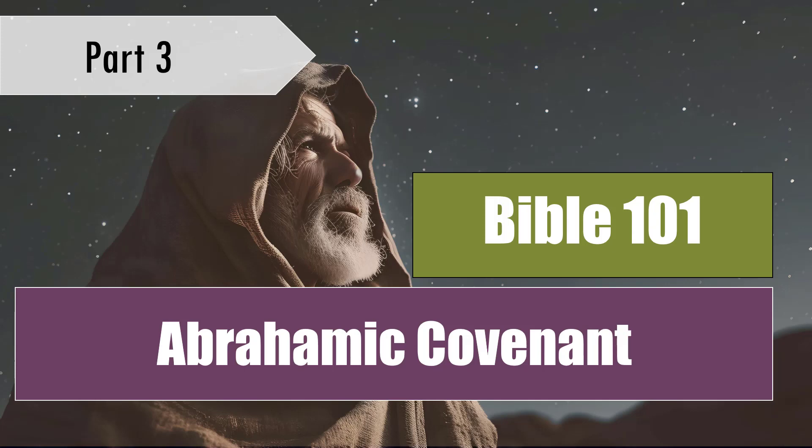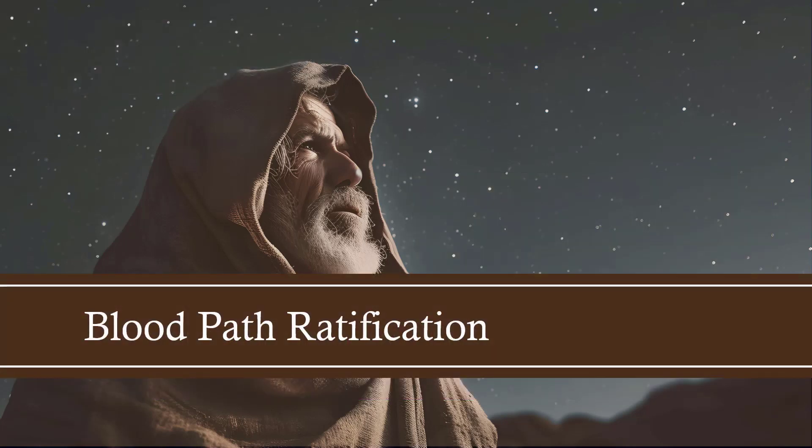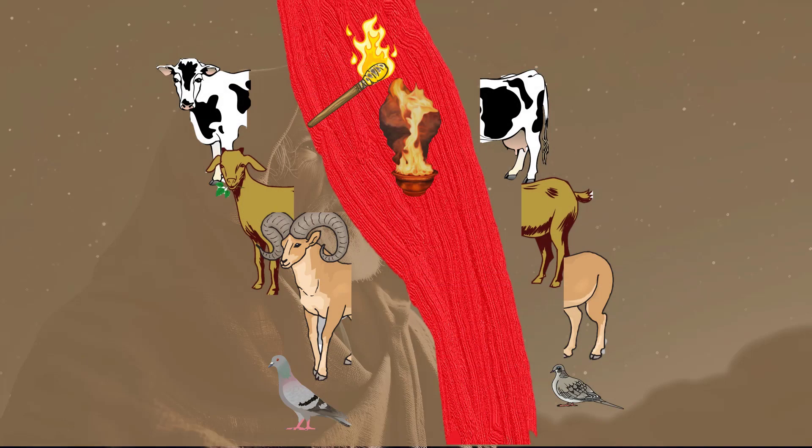This week we'll be exploring the Abrahamic covenant and looking at the symbolism of a covenant ratification ceremony. This is a powerful lesson, because when you understand what's happening with the Abrahamic covenant in Genesis 15, you can see why Jesus had to go to the cross for the forgiveness of sins. We need to walk through an ancient covenant ratification ceremony, look at the symbols, and then things start to fall into place.